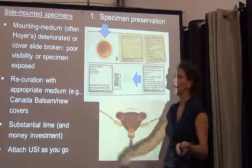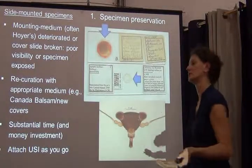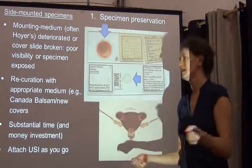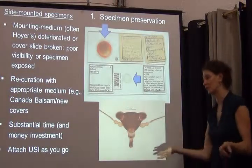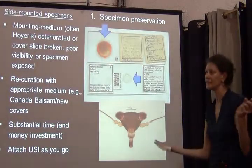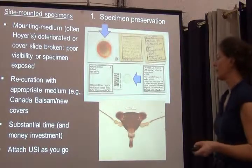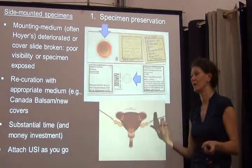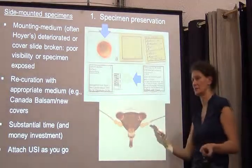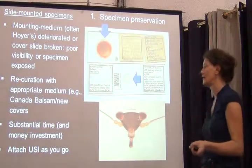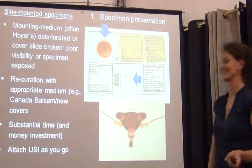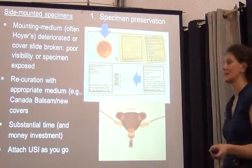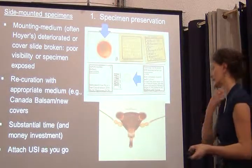This is why people now typically use Canada balsam to embed insect specimens. Another common problem is cover slips breaking, exposing specimens which can even fall out of the medium — particularly catastrophic for type specimens. If you have such a slide collection, you may need to recurate it with appropriate medium and new cover slips, which is a very involved, time-consuming, and expensive project.